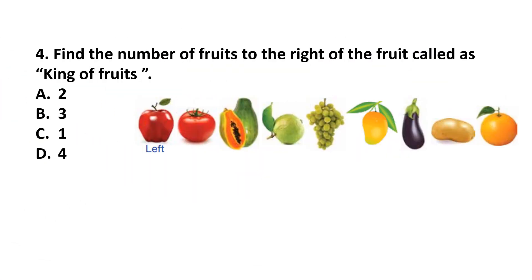Question number 4. Find the number of fruits to the right of the fruit called as king of fruits. Which fruit is called king of fruit? Mango. Mango is called king of fruit. And we have to find out right of the fruit. Right of the mango.